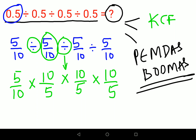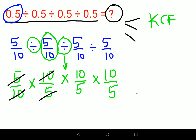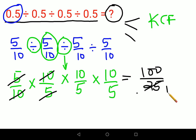Now things are getting cancelled. This and this cancel, and this and this cancel. You can either multiply them as is — that gives you 100 upon 25, and then doing the division you know this is 1 and this is 4, so your answer comes out to be 4.